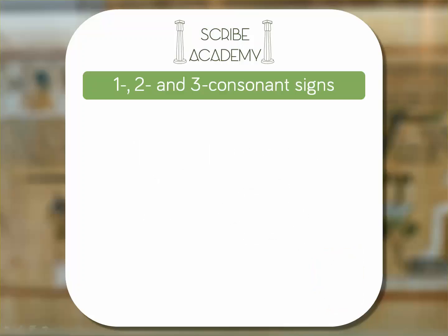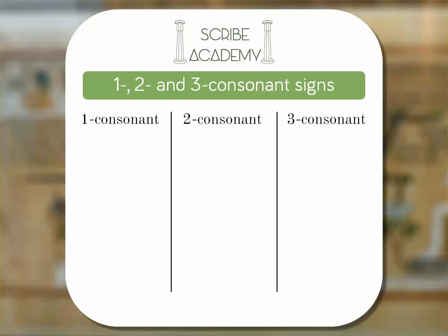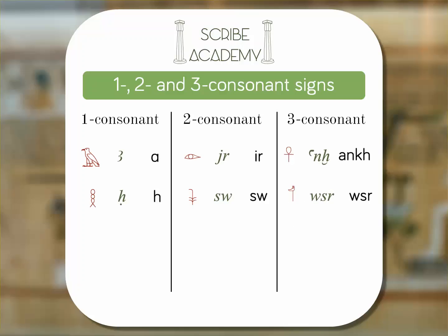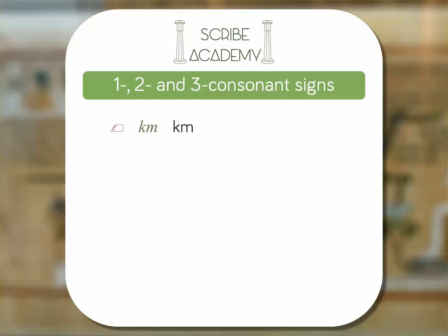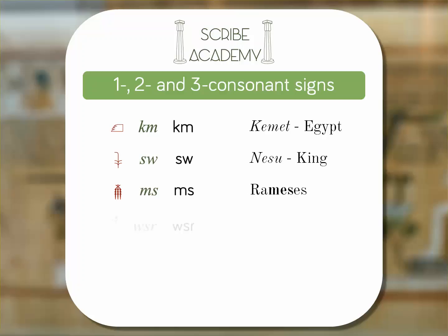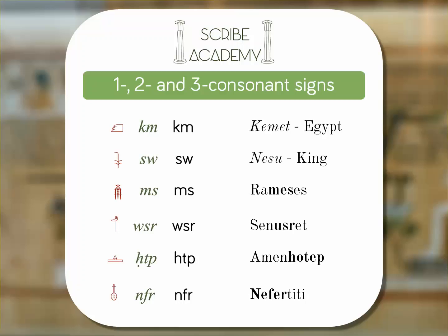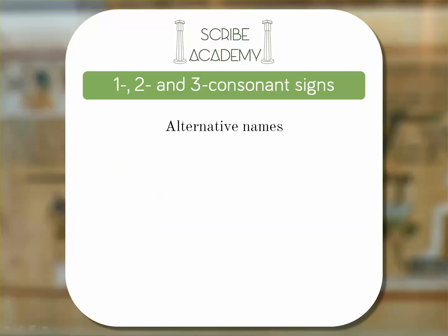Here are a few more examples, some of which may already be familiar to you. 'Khem' is used in the word 'Kemet,' the ancient Egyptian name for Egypt. 'Su' is part of the word 'Nesu,' meaning king. 'Mez,' 'User,' 'Hetep,' and 'Nefer' are all found in names you'll know, such as Ramses, Senusret, Amenhotep, and Nefertiti.